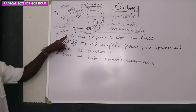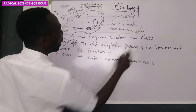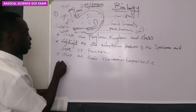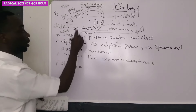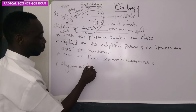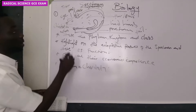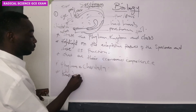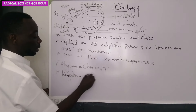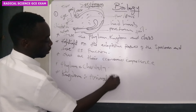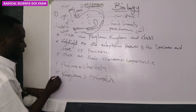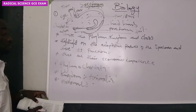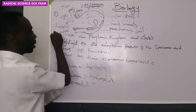Having labeled them, let's answer starting from this question. They say: state the phylum, kingdom, and class. The phylum of this particular animal, which is a rat, is Chordata. The kingdom is Animalia. And the class — they are Mammalia. So that is the answer for this particular question.